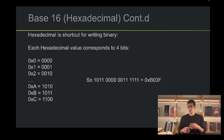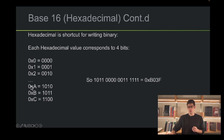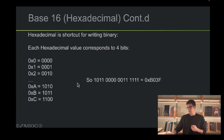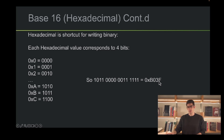Each hexadecimal digit corresponds to four bits. For example, 0x0 corresponds to 0000, all the way to something like 0xC which corresponds to 1100. Here is an example where I have a number in binary which corresponds to four hexadecimal digits: B03F. So this is all we really need to know about the basic data types that C offers us, and about the different bases we can use to express values in C.